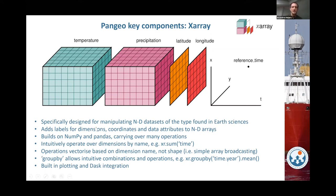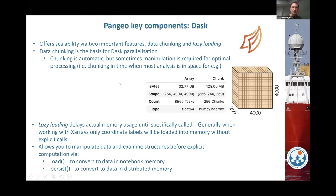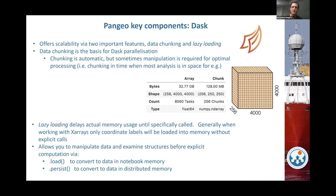Dask is really the backend that makes parallelized computation using Pangeo possible. Two of the main features that facilitate this are data chunking and lazy loading. Data chunking is basically splitting up your very large array — here's an example: you have a 32 gigabyte array with a very large dimension, but it's split up into much more small and manageable chunks. In this case, instead of being 32 gigabytes, each individual chunk — and there are 256 of them — is only 128 megabytes. When you come to perform computations, the chunks are distributed across the available processes, allowing you to effectively parallelize these operations. This is done automatically and is largely invisible in the background when you're using XArray in Pangeo.